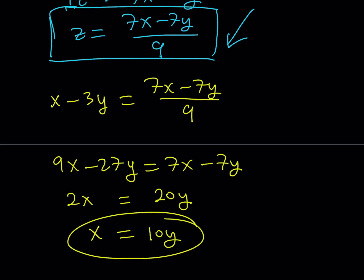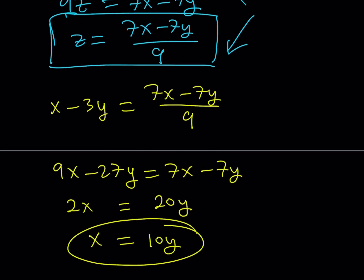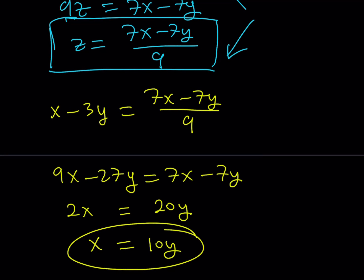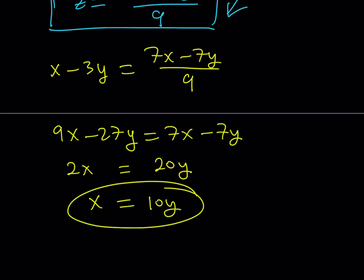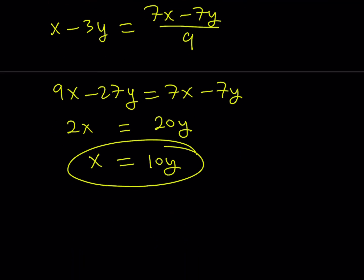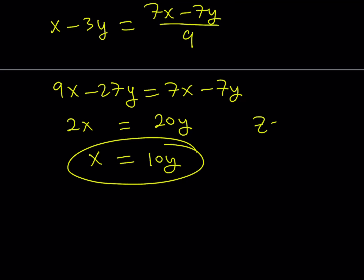This is a very important result. Now we also need z in terms of y. Since z equals x minus 3y, and x equals 10y, substituting gives z equals 10y minus 3y, which equals 7y. So we have z equals 7y.